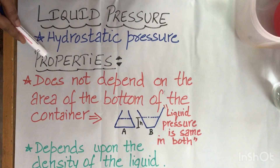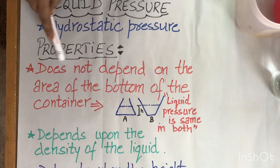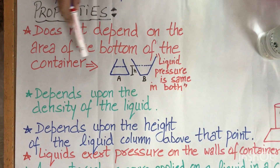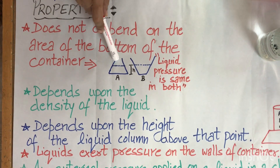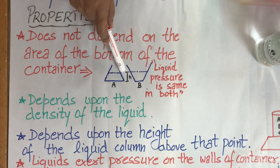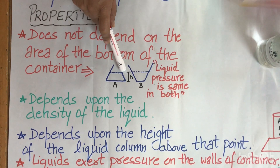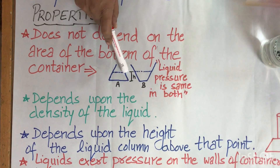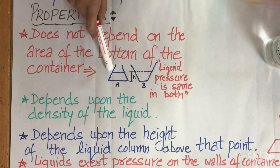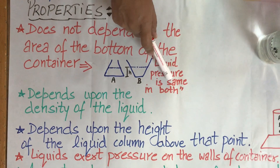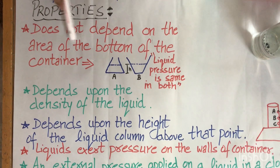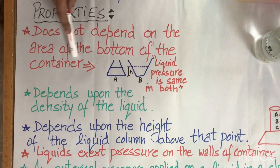The first property of hydrostatic pressure is that it does not depend upon the area of the bottom of the container. If you take two containers with different bottom areas but with the same liquid at the same height, the pressure exerted by the liquid will be the same in both containers.